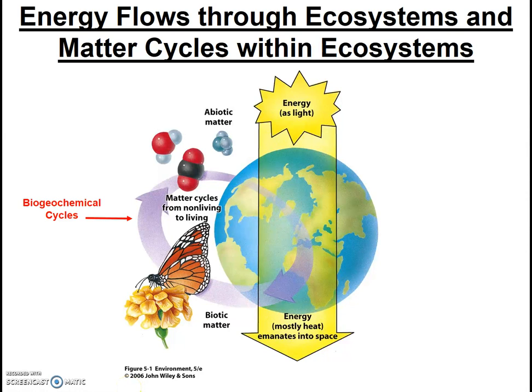We call the cycling within the Earth's system nutrient cycles or biogeochemical cycles. Your book uses the term nutrient cycles, but I like the term biogeochemical cycles, because just looking at the word you can get a sense of how these cycles work. Biological, geological, and chemical processes are all involved.